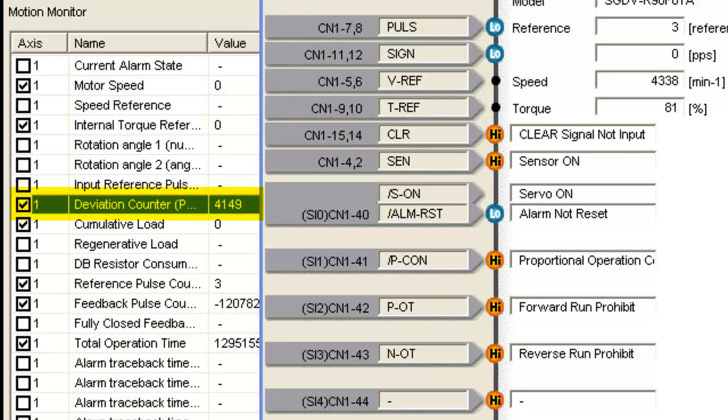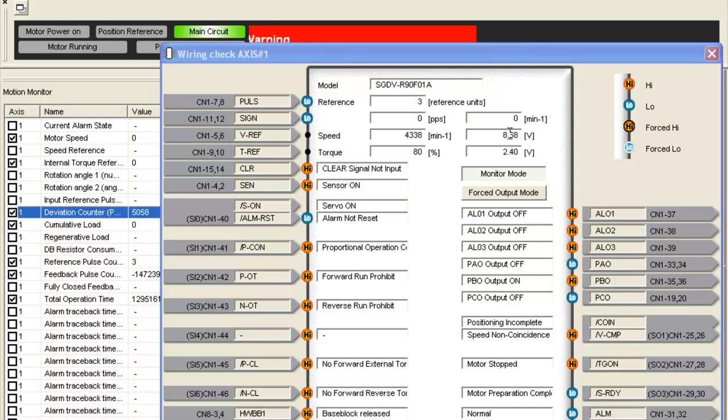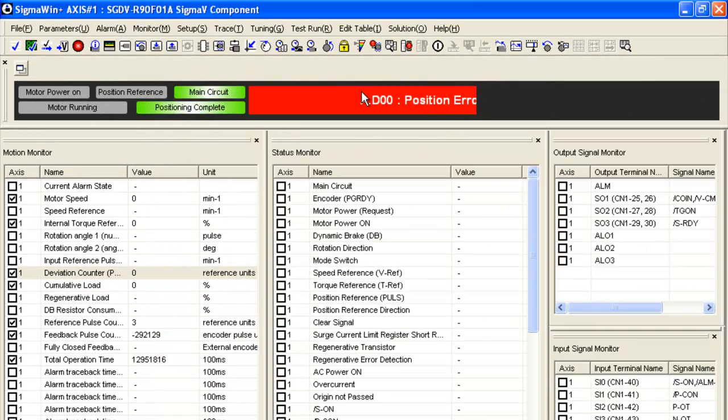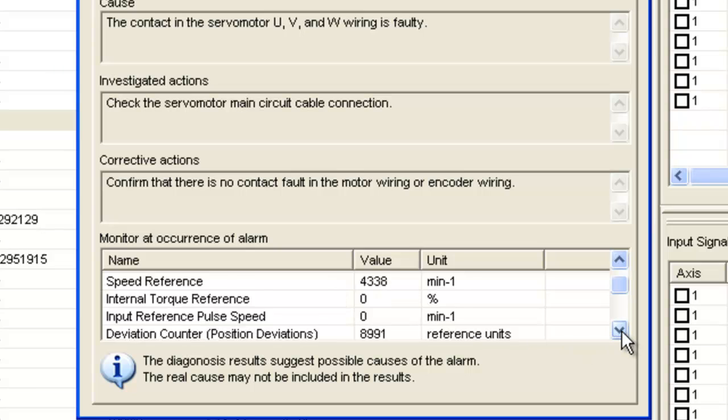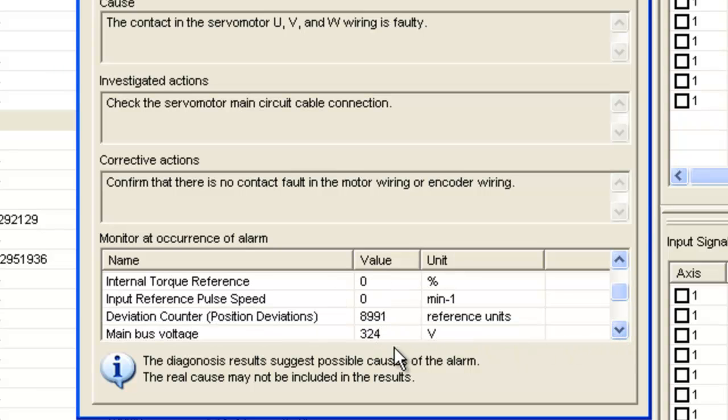Now it says 4149. That's 41.49 degrees. And if I go up here a little bit above 45, you can see I've got the overflow warning. And if I keep going, I get the position error pulse overflow. And I can go take a look at that alarm. And you'll see that if I scroll down a little bit, the deviation counter did go right about up to 90 degrees.